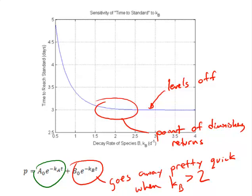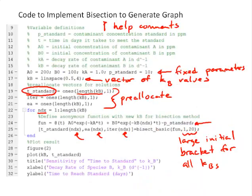What we're really focused on in this video is how we have now used the bisection method to get through that dead end and actually do the parametric analysis that we wanted to do and determine the sensitivity of the time to reach the standard to that decay rate KB.